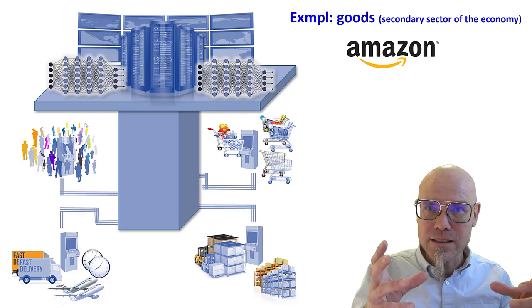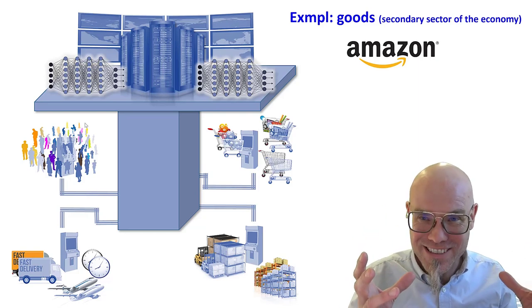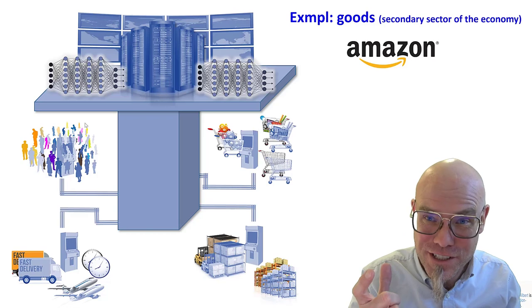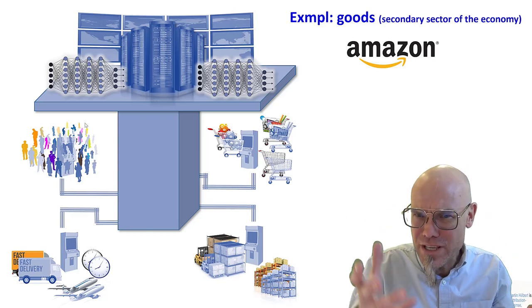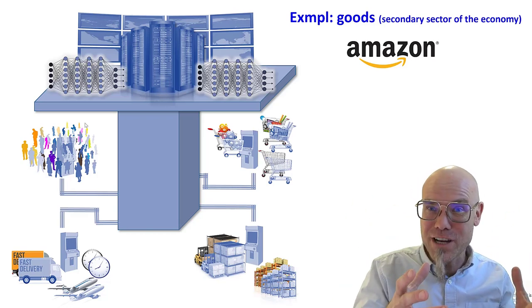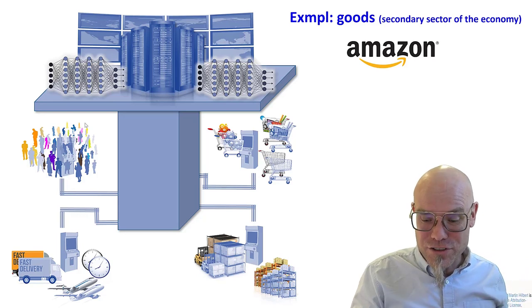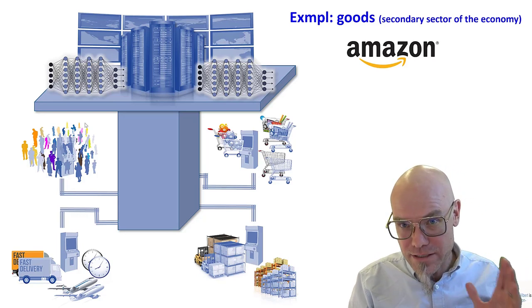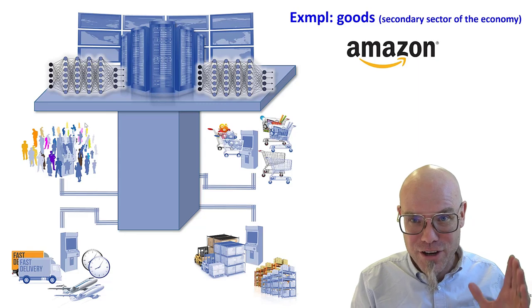You can optimize these processes that are involved there, the digital copies of it, actually the digital twin of the retail sector that it has in order to optimize what's going on in the real world. So that's how that works. And this is an example from the secondary sector of the economy, goods.